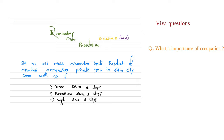The patient came with chief complaints of fever since four days, breathlessness since three days, and cough since three days. Always mention these complaints in chronological sequence, and always mention the time since onset of each complaint.